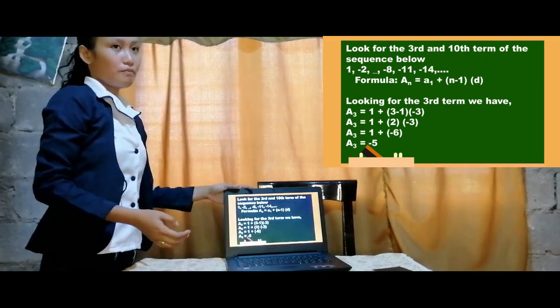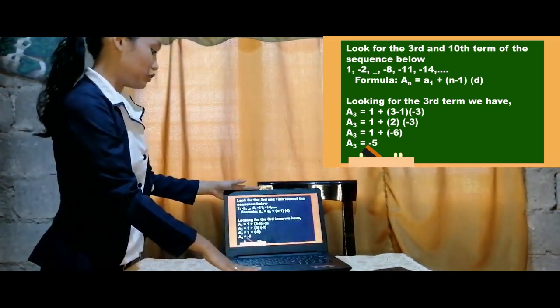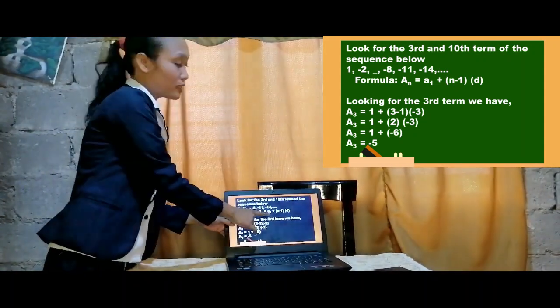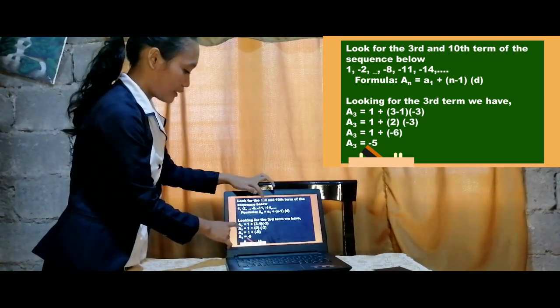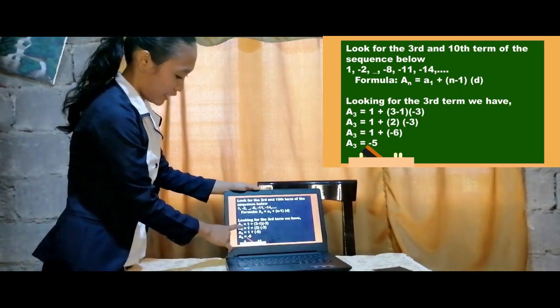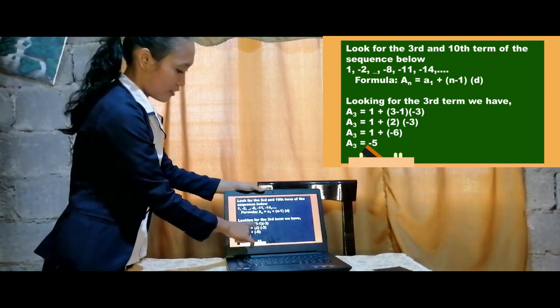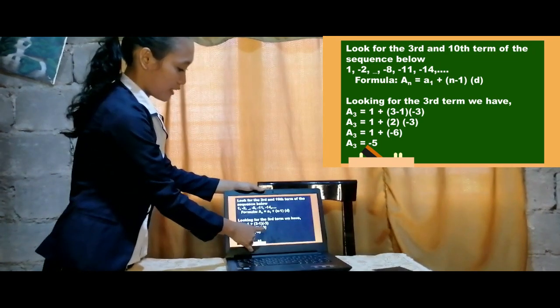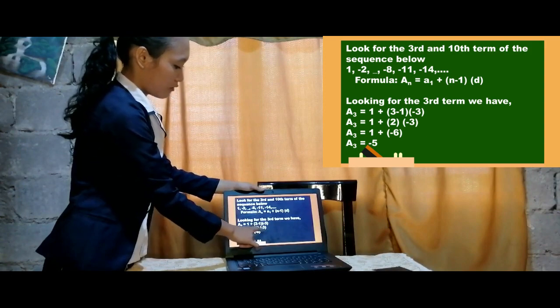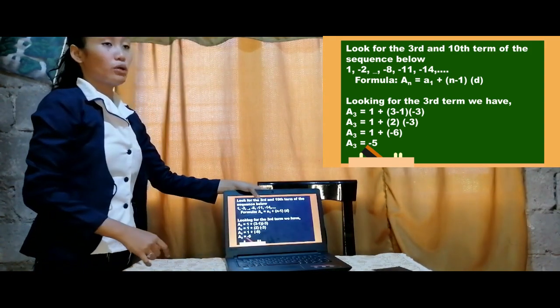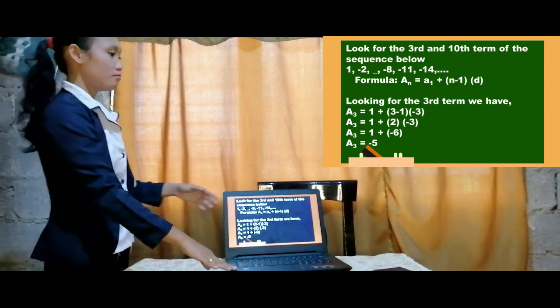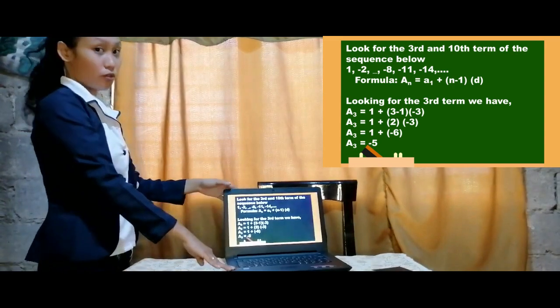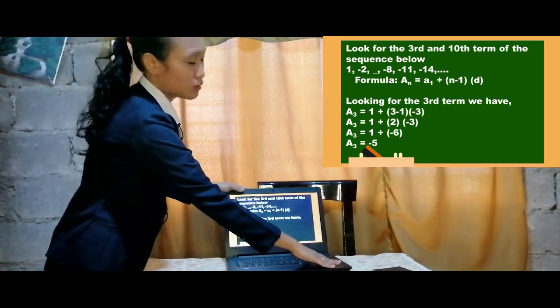Substitute the terms on the formula. As we have said, the formula is a sub n equals to a sub 1 plus the quantity of (n minus 1) times d. So a sub 3: a sub 1 is 1 plus (3 minus 1) times d. 3 minus 1 is 2, times negative 3. 2 times negative 3 is negative 6. 1 plus negative 6 is negative 5. We must know how to use the PEMDAS rule. Be noted with that.